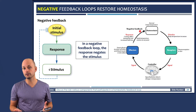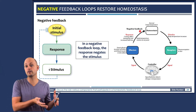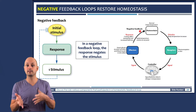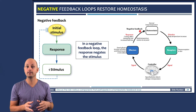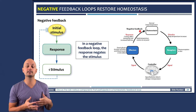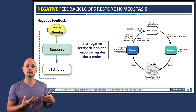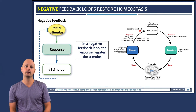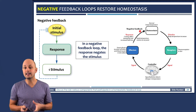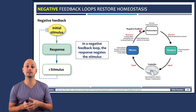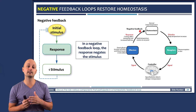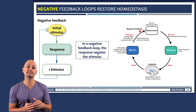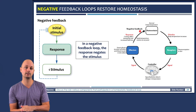The job of the controller is to compare the stimulus to the set point and activate an effector that coordinates some kind of response inside the body. In order to maintain homeostasis, the response must be a negative feedback response, and that means the response has to decrease the stimulus.